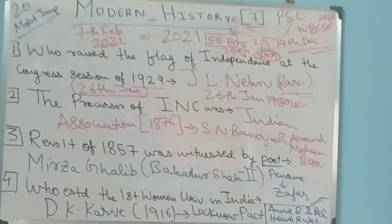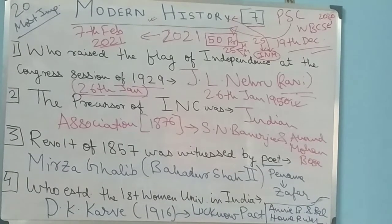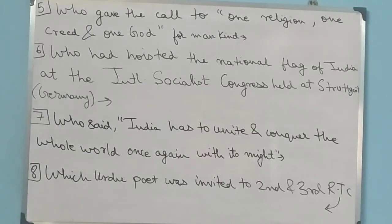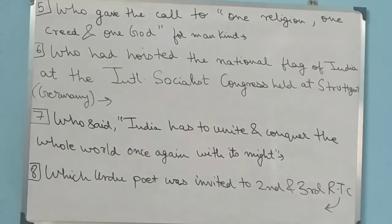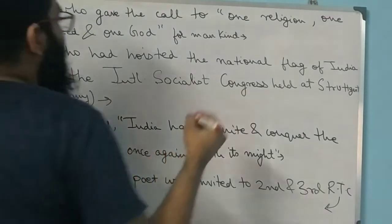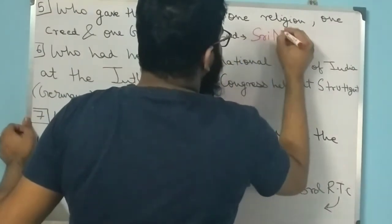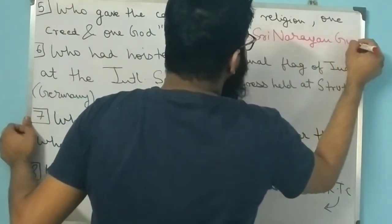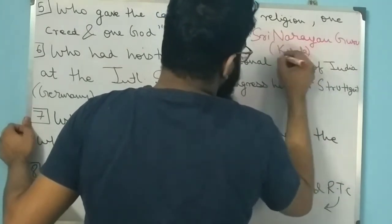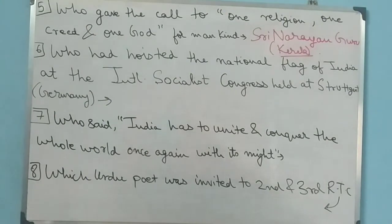Thank you for your support - the support you have shown is quite unbelievable, keep continuing to support me. Question 5: Who gave the call for 'One religion, one creed and one God for mankind'? The answer is Shri Narayan Guru. This call was given in Kerala. Shri Narayan Guru belongs to the state of Kerala.